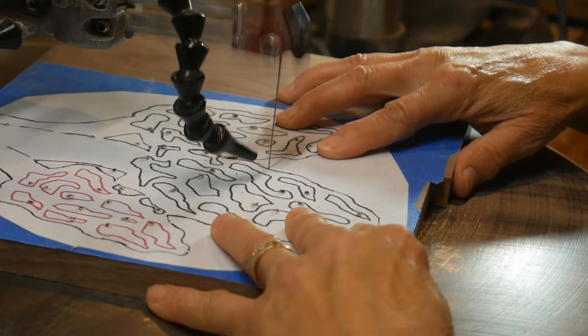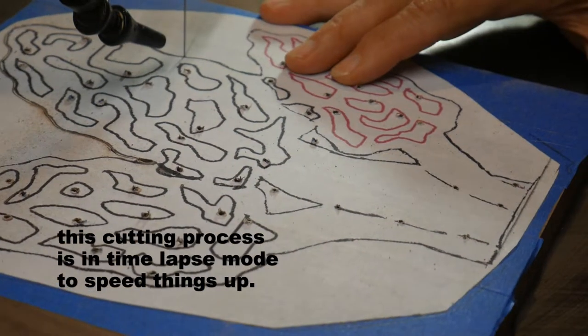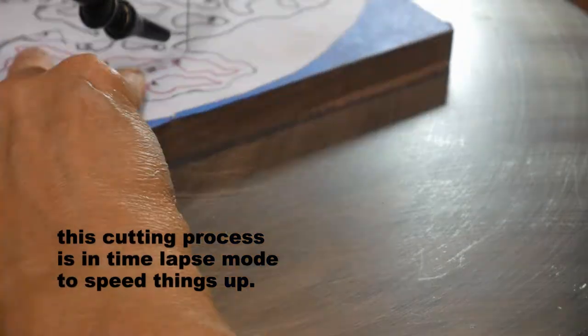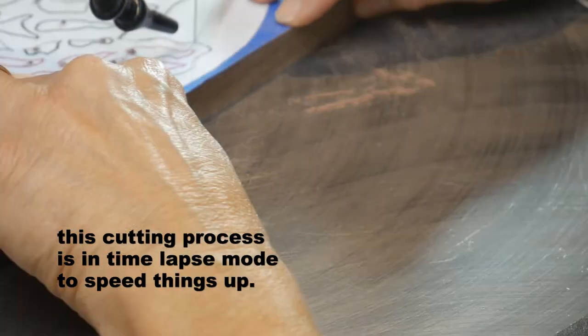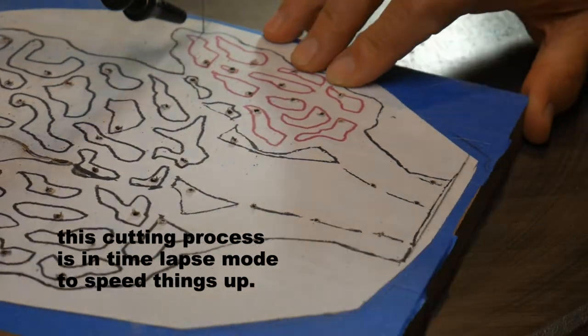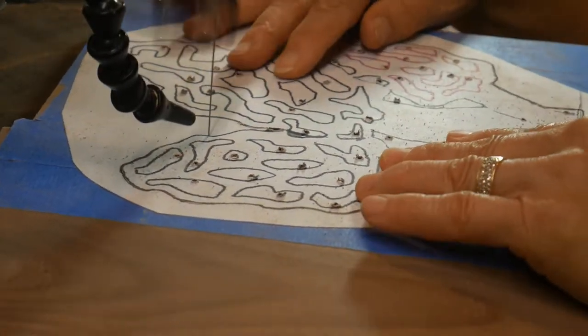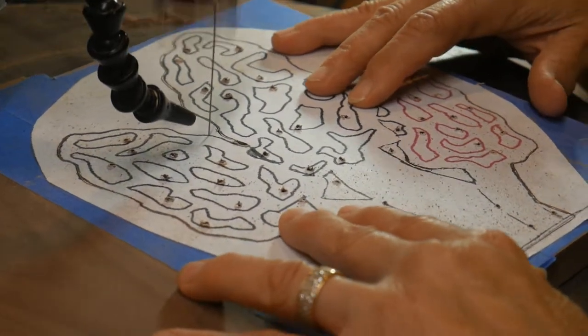These notes that I'll be giving you right now are mainly for the new scroll sawers. You want to make sure to have your hand placed on either side of your piece, and lightly keep it against the table, so it does not lift up and bang on you.